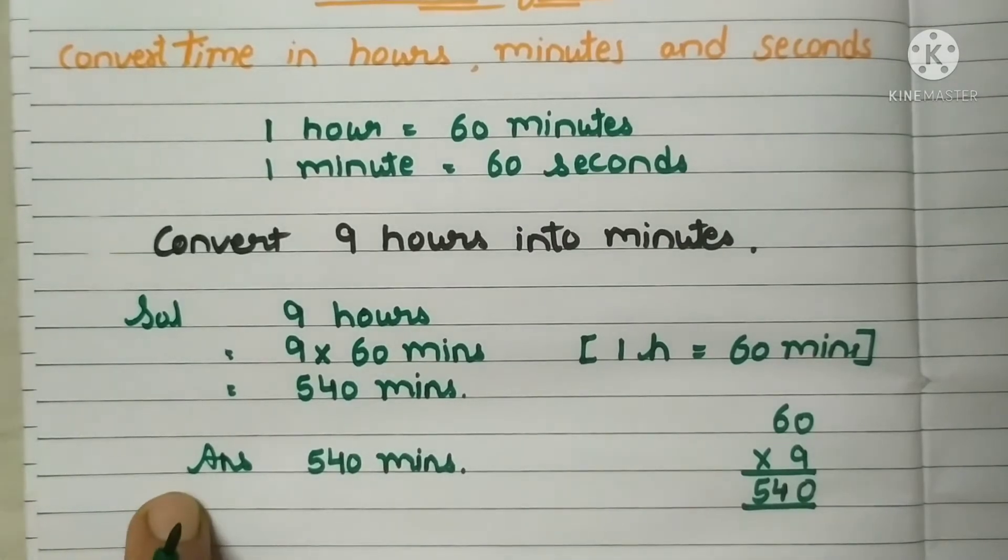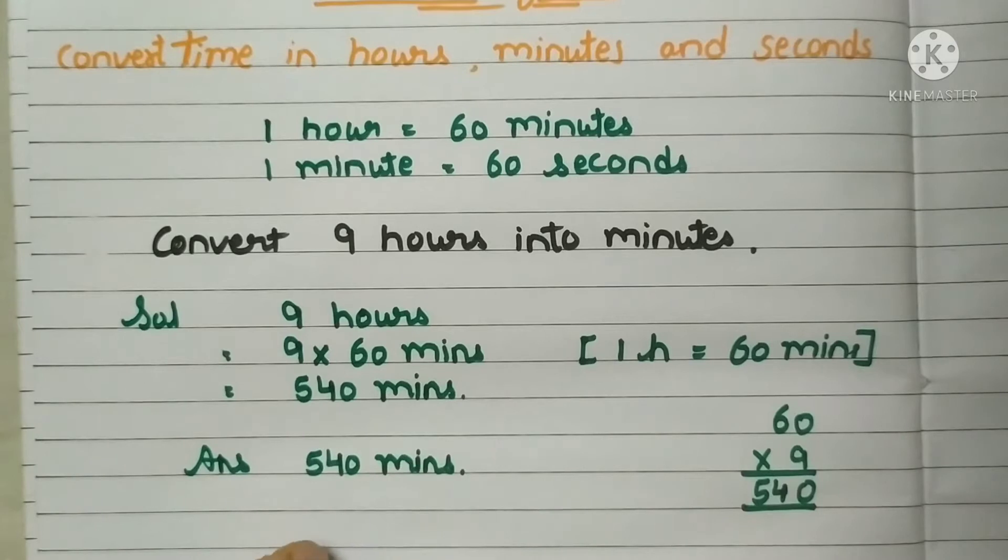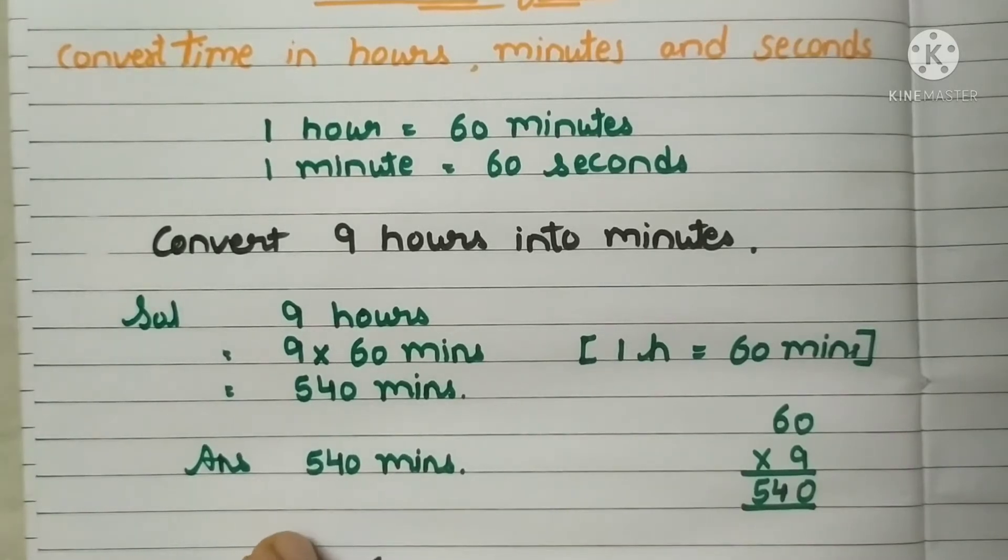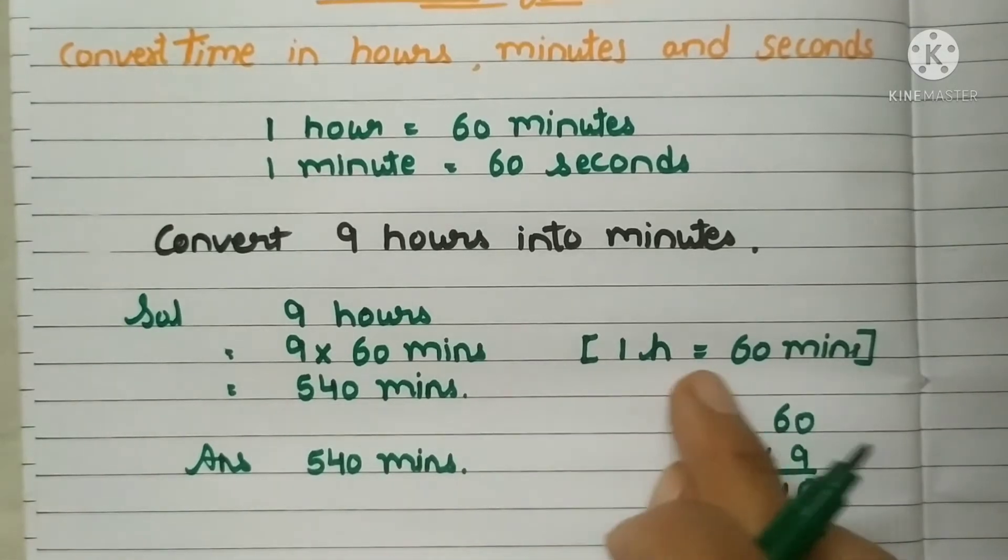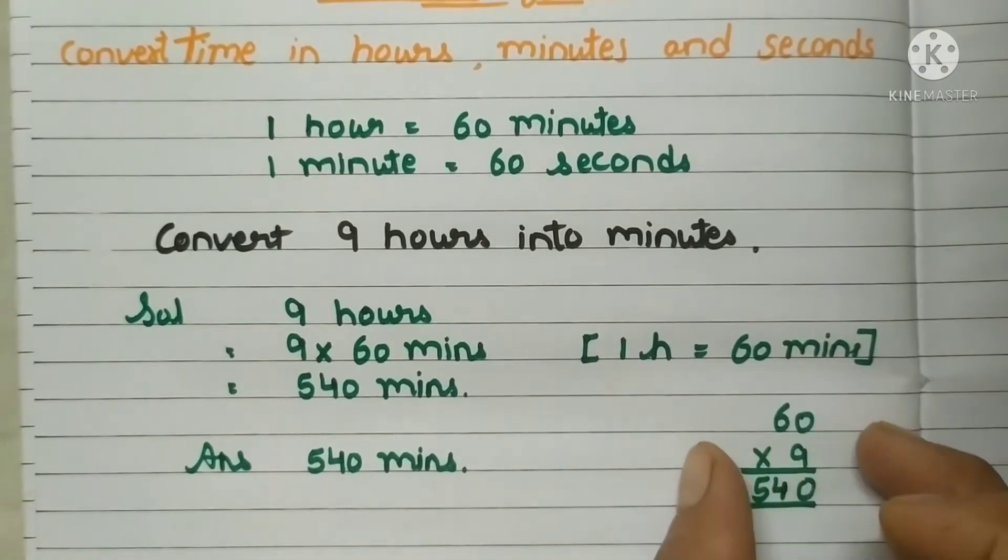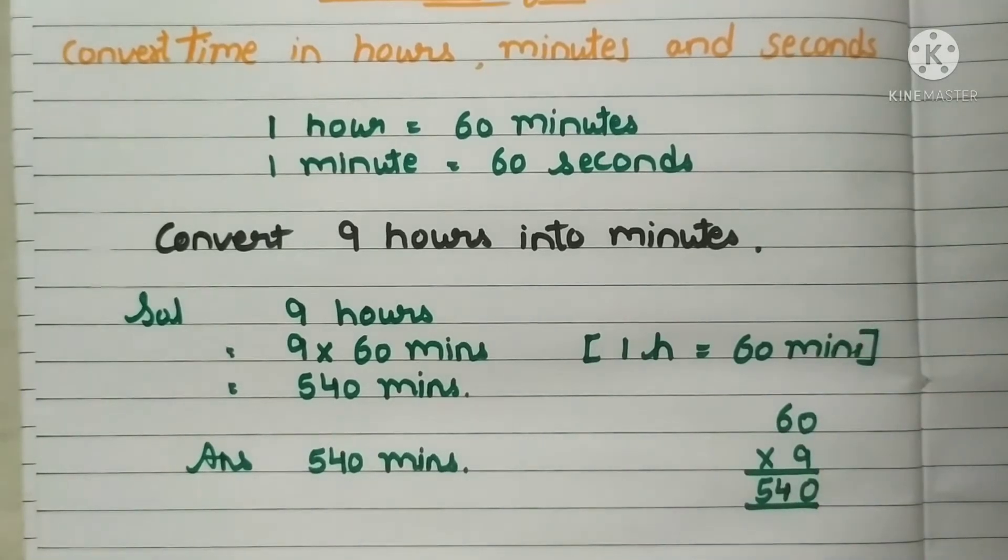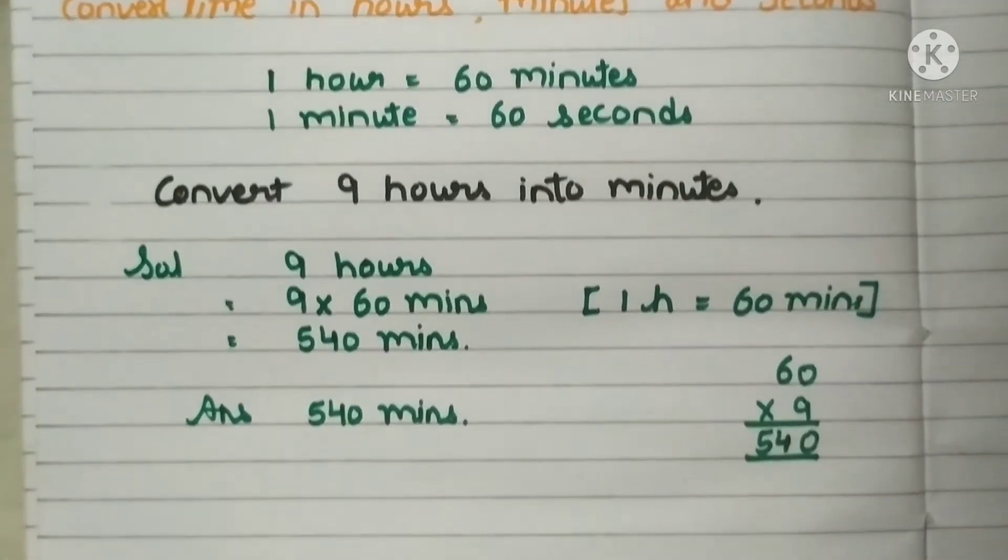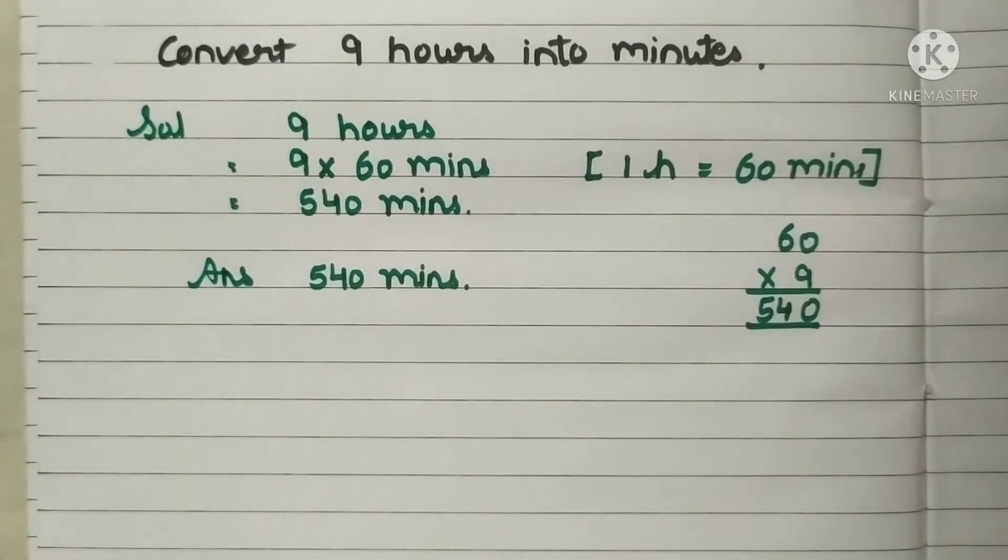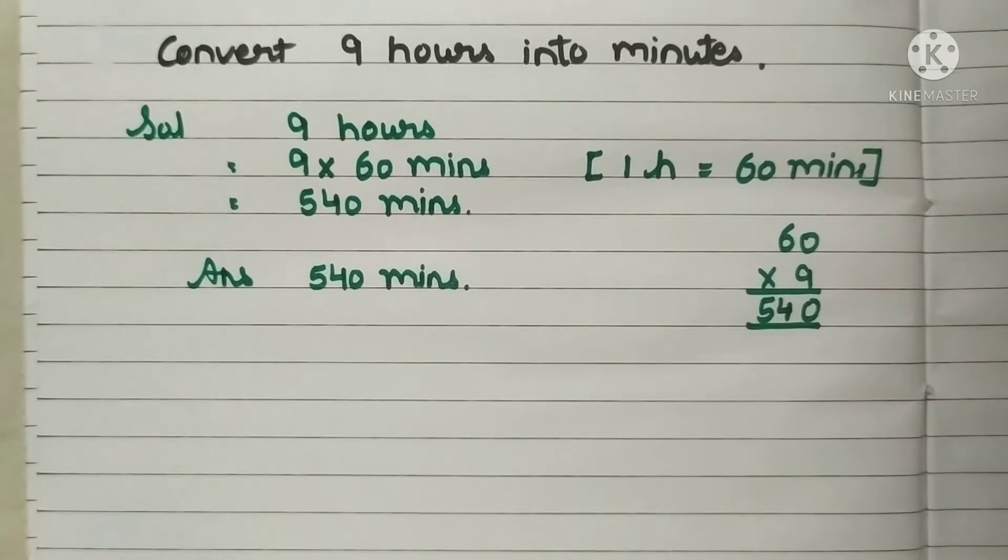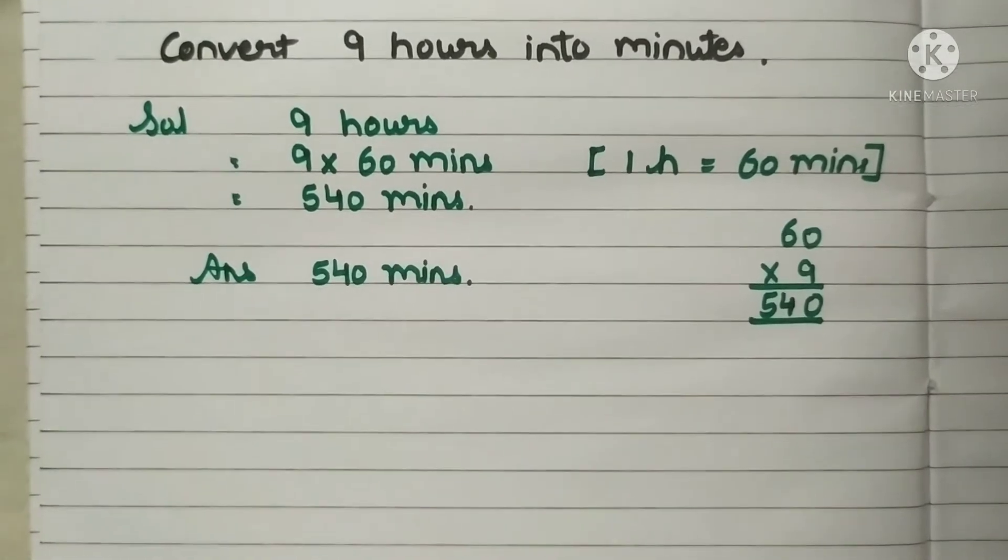Now the answer of this is 540 minutes. But you don't forget to write this ANS, answer. Because it looks very good and as well as it makes sure that you know how to do it. And don't forget to write the formula also. And this rough work you will show at the rough side only. Let's do few more examples. We have understood how to convert hours into minutes. Now we will understand how to convert minutes into seconds.